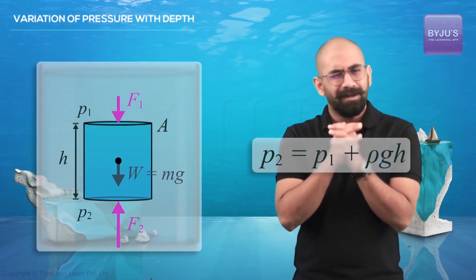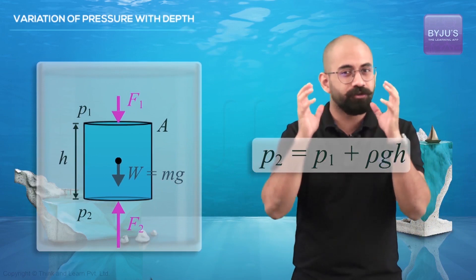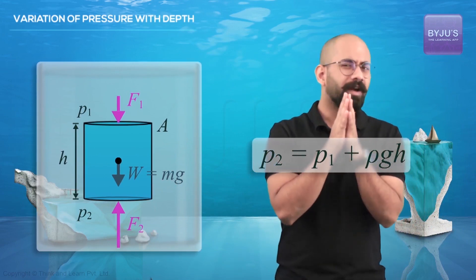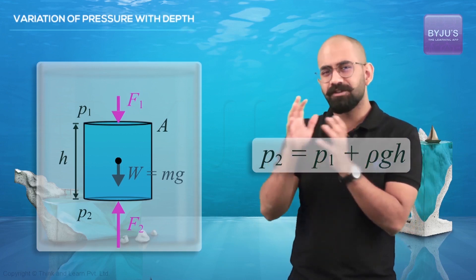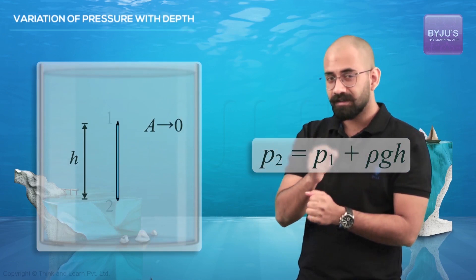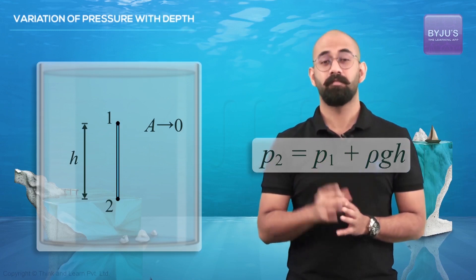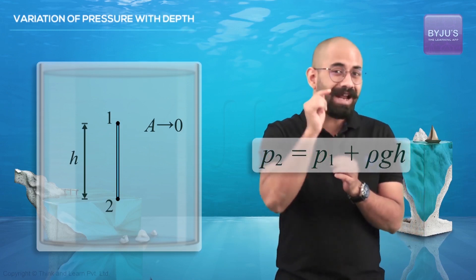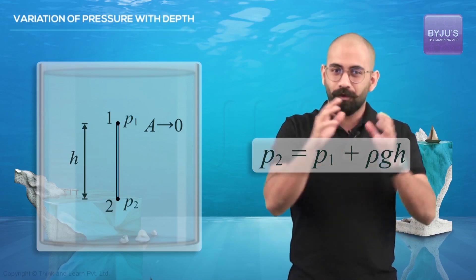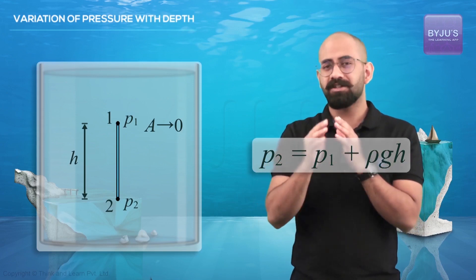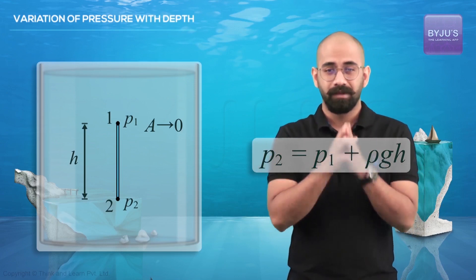We can see that this pressure difference is independent of A. That means this would be true irrespective of how small the area is. So if I consider an extremely thin cylinder such that the magnitude of the area tends to zero, even in this case P2 should be equal to P1 plus ρGH, where P1 is the pressure at point 1 and P2 is the pressure at point 2. We basically proved that the difference in pressures between two points separated by a height H in a fluid is ρGH.